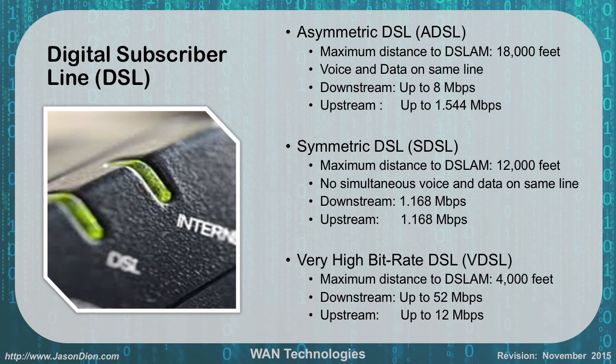With digital subscriber lines, we had three different technologies: asymmetric DSL, symmetric DSL, and very high bit rate DSL. Asymmetric DSL or ADSL had a maximum distance from the provider of 18,000 feet. You could do voice and data on the same line and have a downstream speed of up to 8 megabits per second. Upload speeds were limited to about 1.544 megabits per second — that T1 speed.